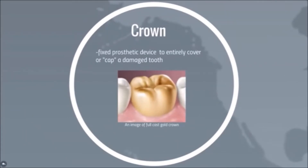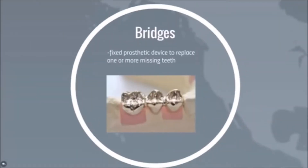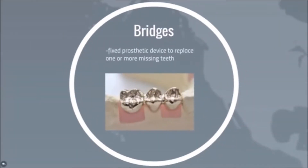What is a crown? A crown is a prosthetic device to entirely cover or cap a damaged tooth. A bridge is a fixed prosthetic device to replace one or more missing teeth. It is sometimes made of semi-noble metal.